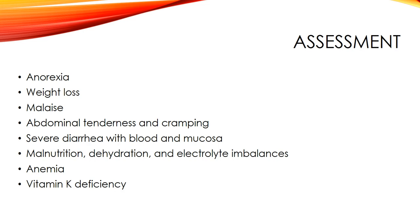For assessment of colitis, you're looking for anorexia because they can't absorb what they eat, weight loss, malaise from lack of nutrients, abdominal tenderness and cramping from inflammation, severe diarrhea with blood and mucosa, malnutrition, dehydration, and electrolyte imbalances. Anemia results from the inability to absorb nutrients, and there is also a vitamin K deficiency.